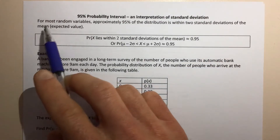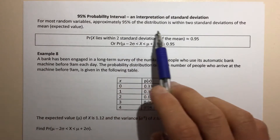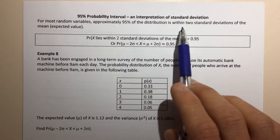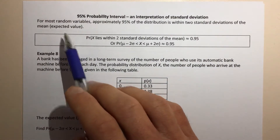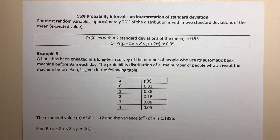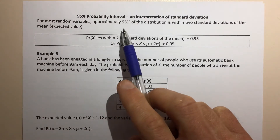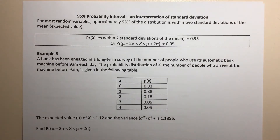There's this idea that for most random variables, approximately 95% of the distribution is within two standard deviations of the mean, or within two standard deviations of the expected value. This is an approximation — it's not a concrete rule, it doesn't work for every distribution, but it does happen in a lot of cases that approximately 95% of a distribution will be within two standard deviations of the mean.